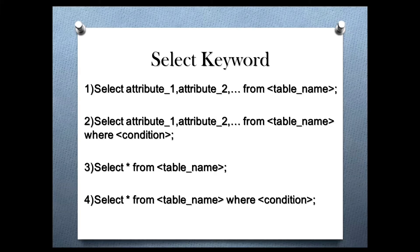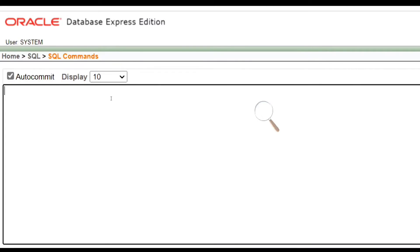Select keyword. The select keyword is used to return the tuples from the table. We can either select some rows and some columns, or all of them. We can use the select keyword in four ways. The first is to select some specific columns of all the rows.